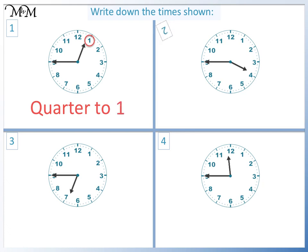Question two. The minute hand is pointing to nine, so quarter to. The next hour is four. So the time is quarter to four.